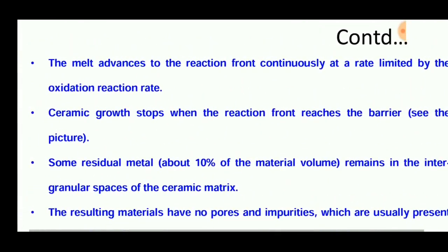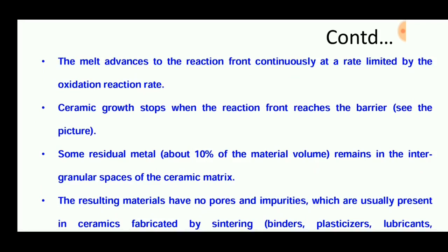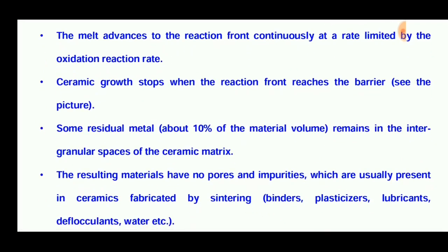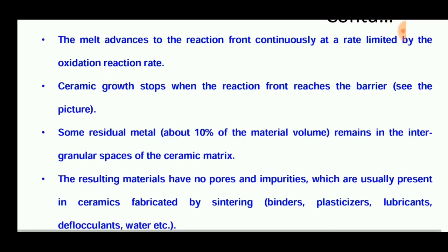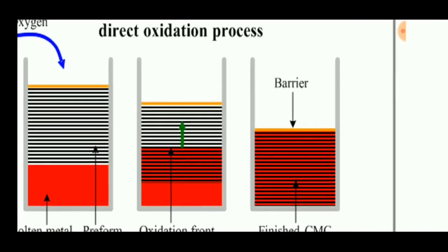The melt advances to the reaction front continuously at a rate limited by the oxidation reaction rate. The ceramic growth stops when the reaction front reaches the barrier. This barrier is placed at the top of the reinforcement so that the molten metal cannot go past it.